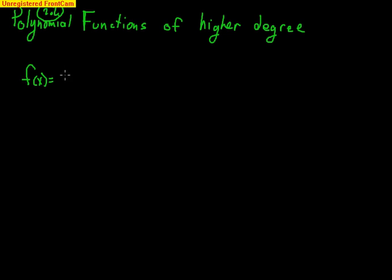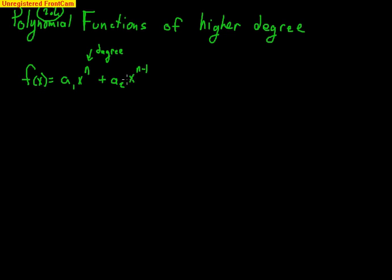A polynomial function starts off with A sub 1 times x to the n — that is your leading term. So n represents the degree, and n is going to be the largest exponent. A sub 1 is your leading coefficient. Then after that you have other coefficients and variables, but notice that the degree is always going down, continuing all the way down until we have a single coefficient — a single value.